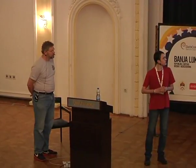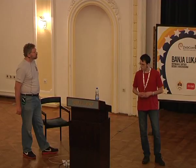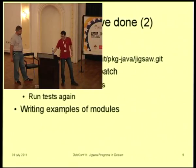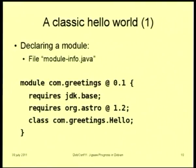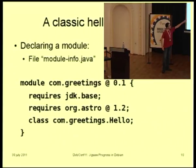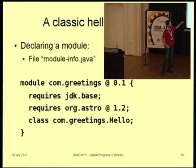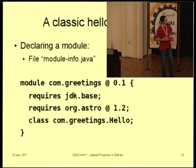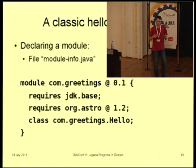After that we were able to write some example modules, and we're going to see one of the examples just now. Jigsaw introduced a new file which describes what a module is and what modules it uses inside a Java project. This file is called module-info.java and contains generally this kind of content. As you can see, we declare a module with the keyword 'module', then its name and version number. The next two lines are the modules required to make the top module work, and then we have the main class of the module to run when we launch the module.